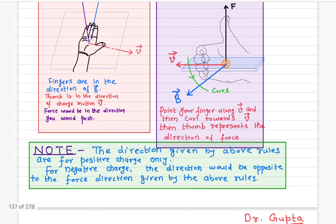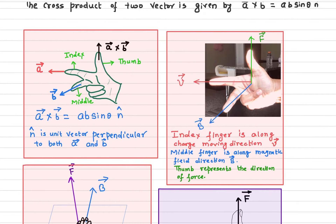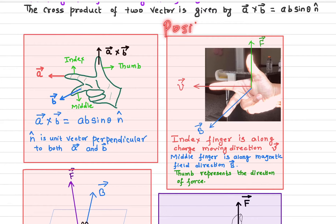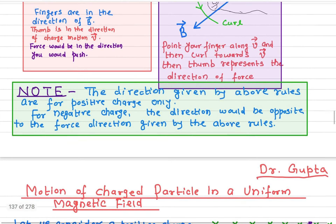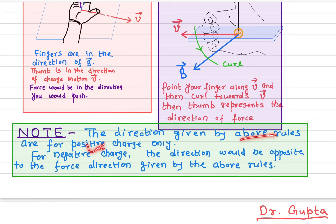So these four techniques are used to find out the direction of the magnetic force. All these directions are for the positive charge only. Everything I've said here applies to positive charge only. What happens if you have a negative charge, just like an electron? Then the direction of the force would be opposite. So do exactly the right-hand rule — whatever direction you get for the positive charge, if it is a negative charge, then the direction has to be opposite.